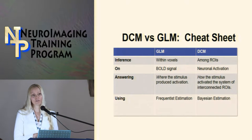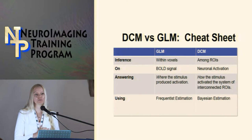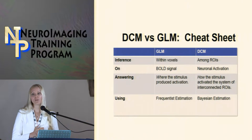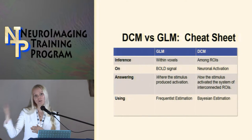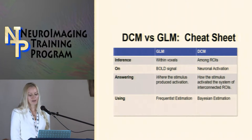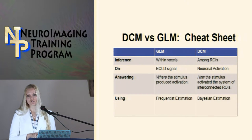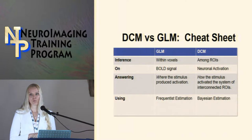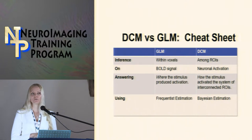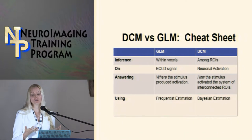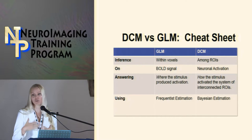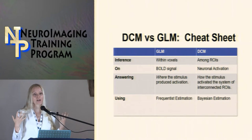Also, when doing DCM, you're not making inference on the BOLD signal — you're looking at the actual neuronal activation. You're making hypotheses on the dynamics, inverting the model to find what the parameters should be, and making inference upon activations. GLM is useful for answering where the stimulus produced activation, but gives no information about how it was produced. For example, in a visual task, your model would assume the visual stimuli affects the entire occipital cortex at the same time, without any idea of which region was affected first.